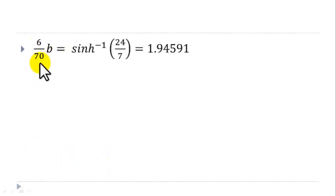Therefore, 6 over 70 b is equal to sinh inverse 24 over 7. And sinh inverse 24 over 7 is 1.94591.